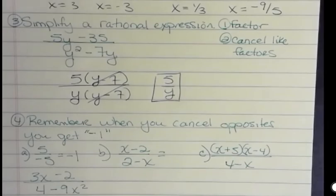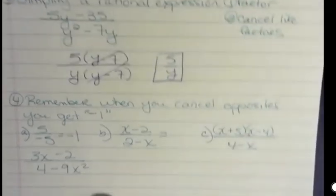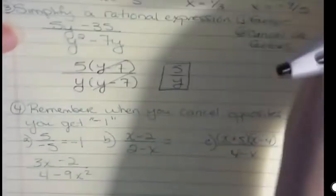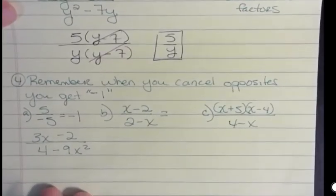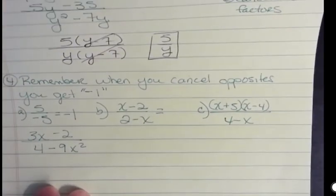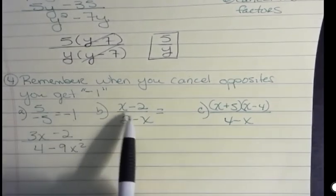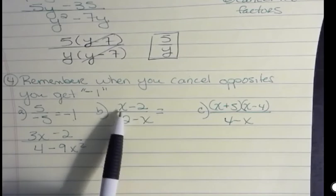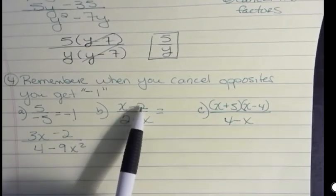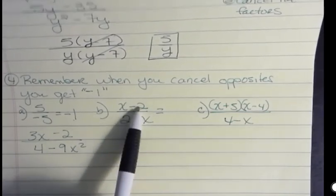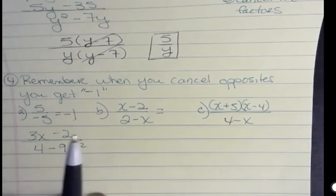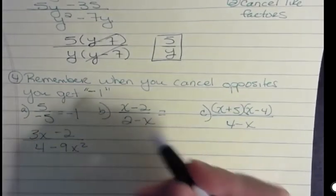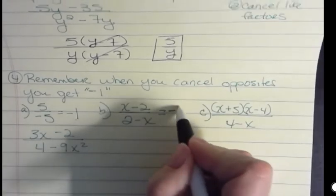Remember when you cancel opposites, you get negative 1. I'll show you an example for part A. That's very simple. 5 over negative 5 is negative 1. What about (x - 2) over (2 - x)? Well, those are opposites because this is positive and that's negative. These are opposites as well, negative 2 and positive 2. So when you have a binomial that's an opposite, then that cancels out to be negative 1. So that's going to be negative 1.